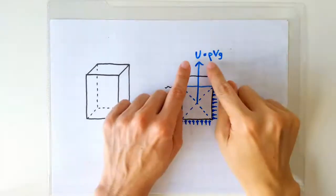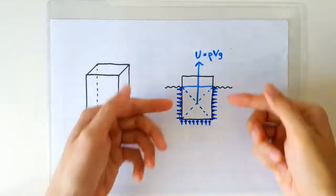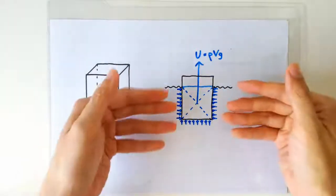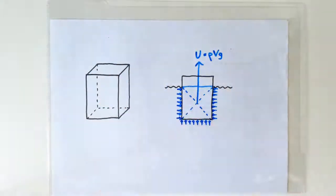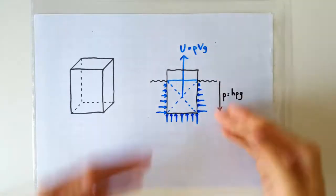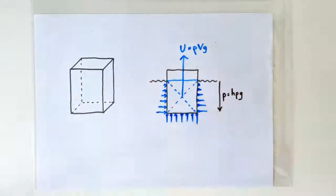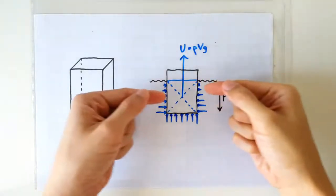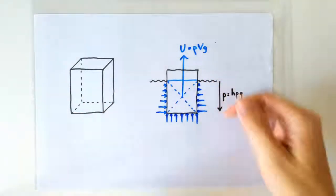Remember, the uptrust is actually the resultant of all the pressure forces acting on every point of the cuboid. Since fluid pressure increases with depth, this is a more accurate depiction, showing the pressure forces increasing as we go deeper down.